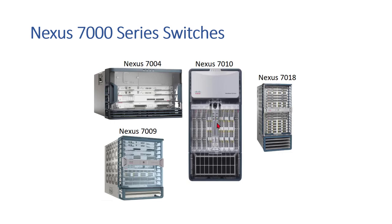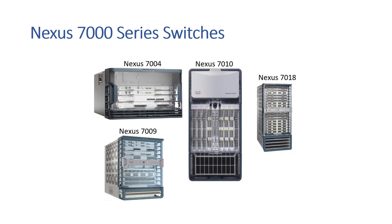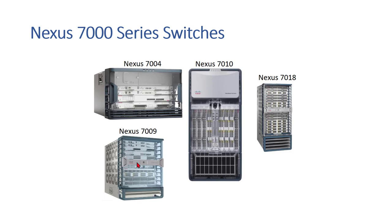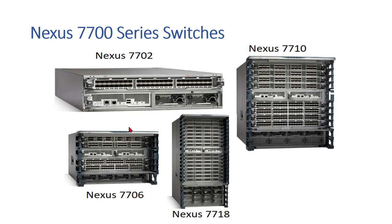The position of supervisor engines is reserved — you cannot insert a supervisor module into just any slot. Every chassis has redundancy slots reserved for supervisors. So in the 7004, two slots are reserved for supervisors and two for data plane forwarding. For the 7009, two are reserved for supervisors and seven for payload I/O modules. The 7009 was introduced for easy migration from the Catalyst 6509E, as many enterprise customers were using that chassis.